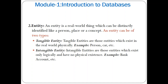For example, consider two entities: customer and bank. A customer is a tangible entity because the customer can perform transactions with a bank and take a loan. A bank can be considered an intangible entity because the bank account exists logically but has no physical existence.